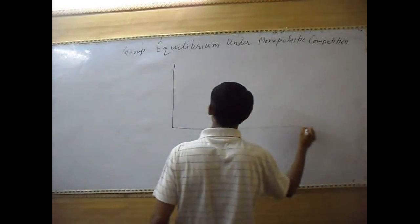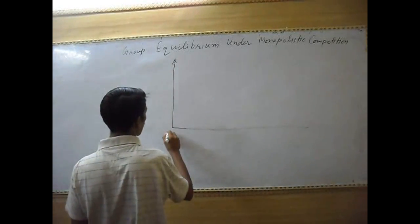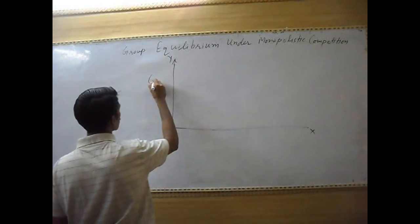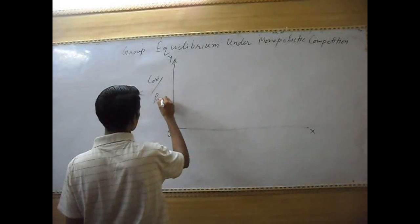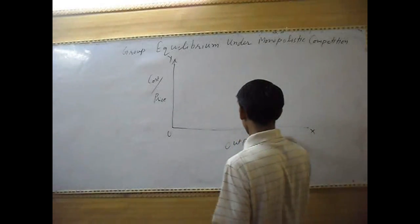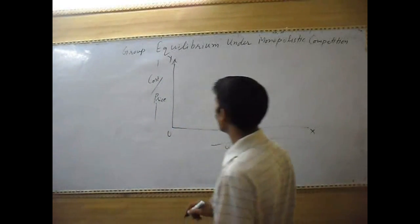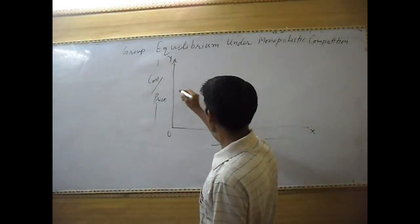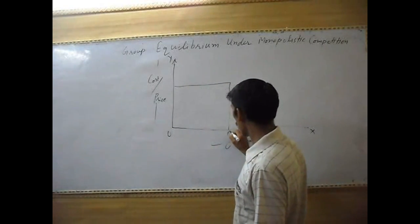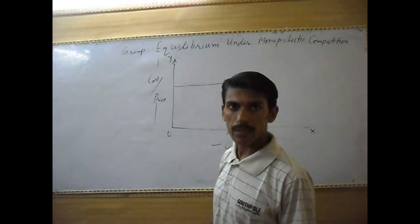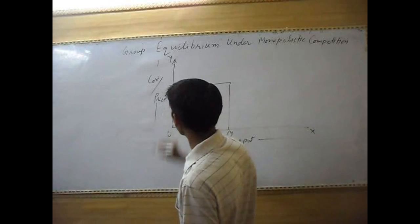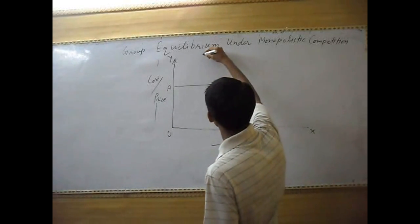Suppose this is a graph. This is the cost and price, and this is the output. Now first, our firms are producing the OM quantity. Different firms are producing OM quantity at OA price.